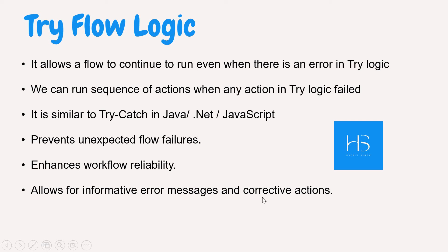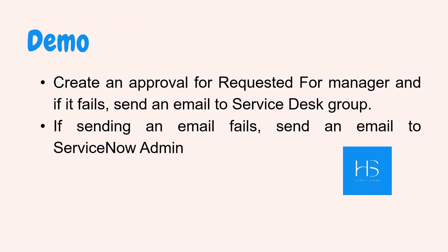Finally, Try Flow Logic allows for informative error messages and corrective actions. For example, if any statement failed in the try block, you can inform the end user that this particular flow has errored out and they may want to contact the admin or resubmit the ticket. This way the end user knows what's going on and doesn't keep waiting without any idea of what is happening with their flow.